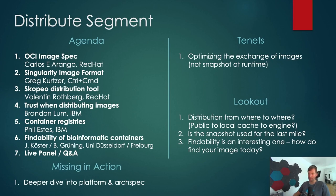How do you share images between different instances and different nodes that might not even have a local file system? The findability agenda point is a very interesting one — how do you find images that someone else built? A lot of people come up with weird naming schemes involving versions, GCC, and other pieces, which gets messy. That's something we need to talk about as well. Let me roll the videos and we will meet in about 60 minutes. Put everything in Slack and we can discuss it afterwards — enjoy!